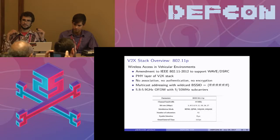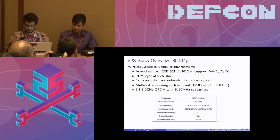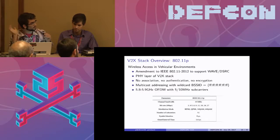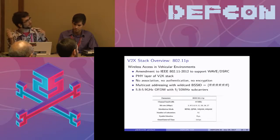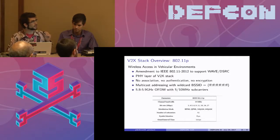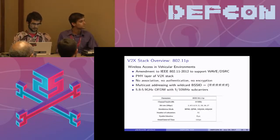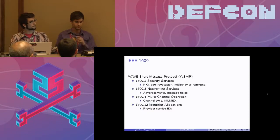802.11p: a multicast ad hoc mesh network mode that specifies no use of authentication, encryption, or association, over 5.8 to 5.9 GHz ITS — Intelligent Transportation Systems — bands. They use 5 and 10 MHz width subcarriers within these channels, and this modulation scheme called OFDM, which is a standard Wi-Fi modulation scheme.